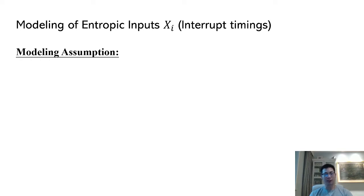According to the white paper, interrupt timings are the primary entropy sources of Windows 10. So as the first modeling assumption, we will assume interrupt timings are independent. While it might not be entirely accurate in practice, we believe that it somehow captures the feature of interrupt timings, which don't appear fully adversarial.